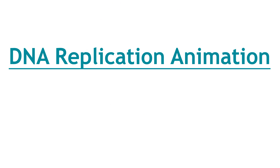I'd like you to have a look at a DNA replication animation. If you do a Google search for 'DNA replication animation', it should be one of the first ones that comes up. What I want you to see is the difference between the replication on the two strands — one of them added continuously as the replication fork opens up, whereas the other is added in the opposite direction in little fragments.